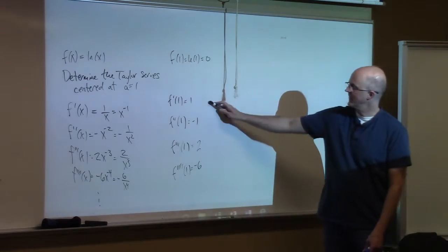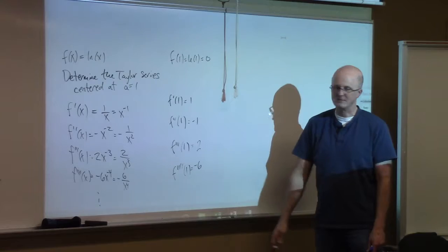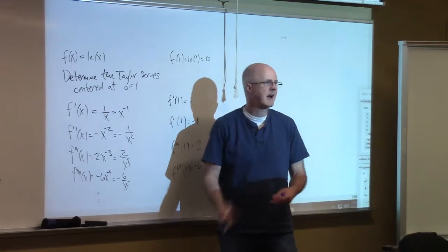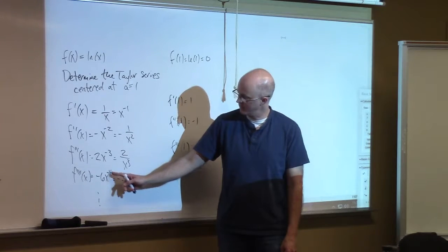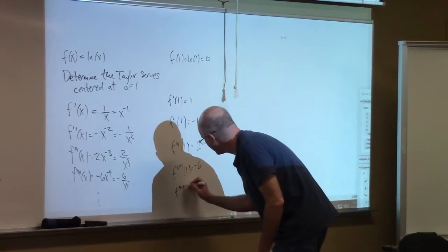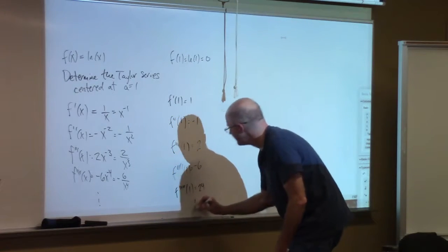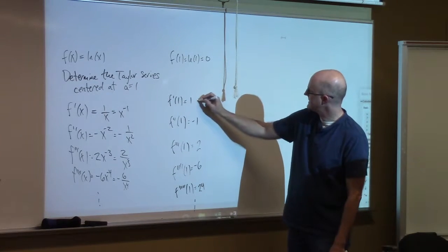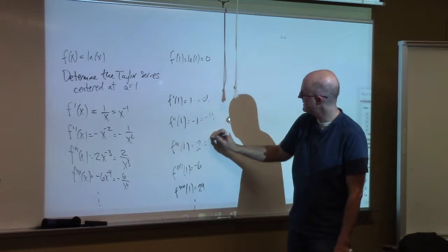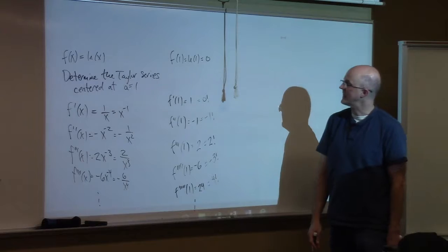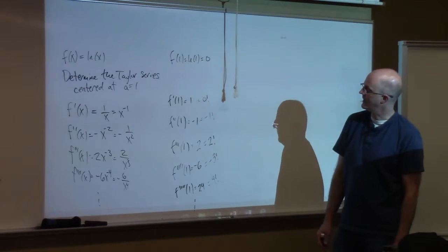The pattern seems to be that the sign alternates: plus, minus, plus, minus, etc. That happens because you keep bringing down a negative power, which keeps changing the sign. The fifth derivative would be positive 24x to the negative five, and at one, f⁽⁵⁾(1) = 24. Those numbers are factorials — 0!, 1!, 2!, 3!, 4! — so the Taylor series centered at a equals one will have these factorial-based coefficients.